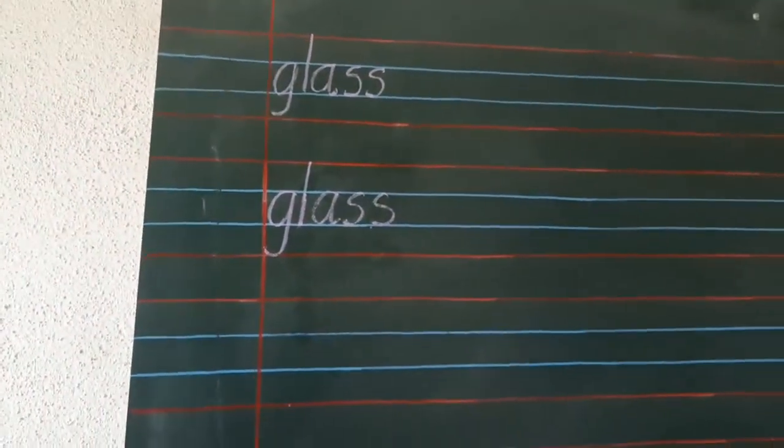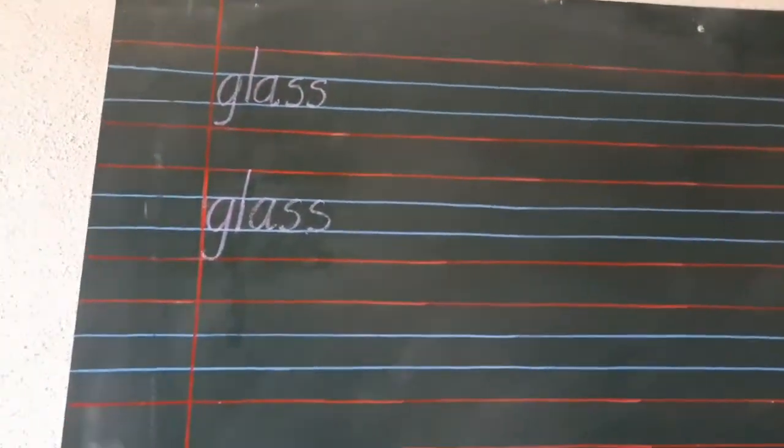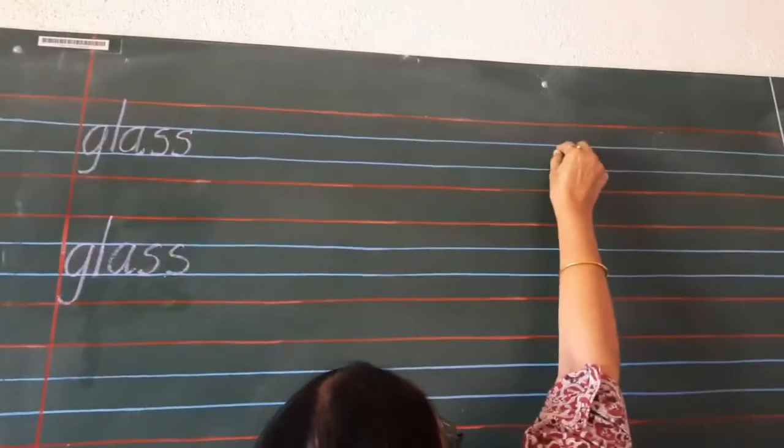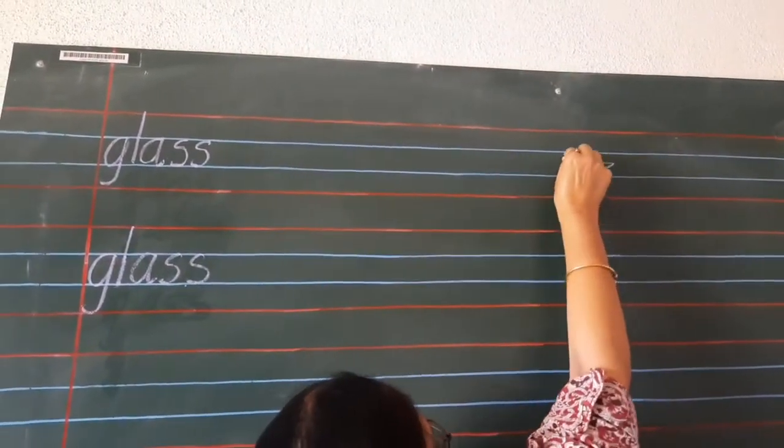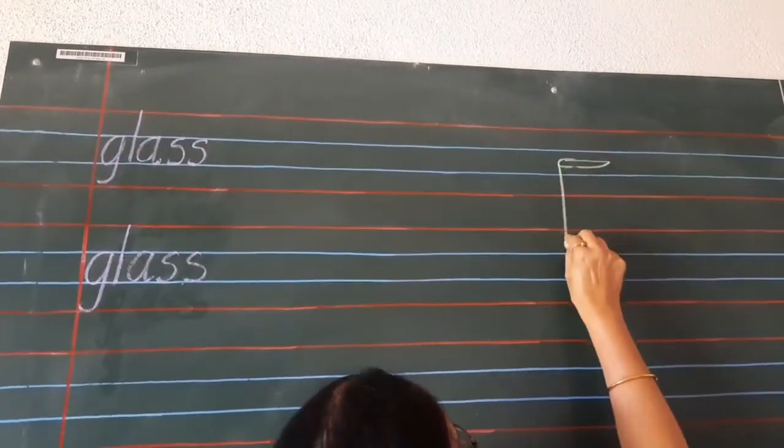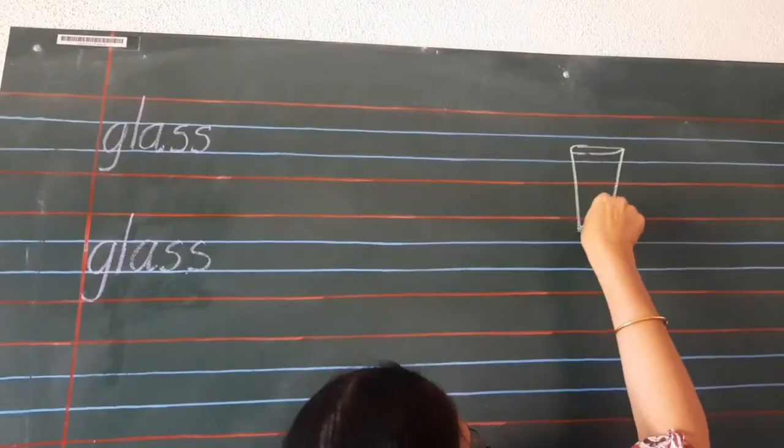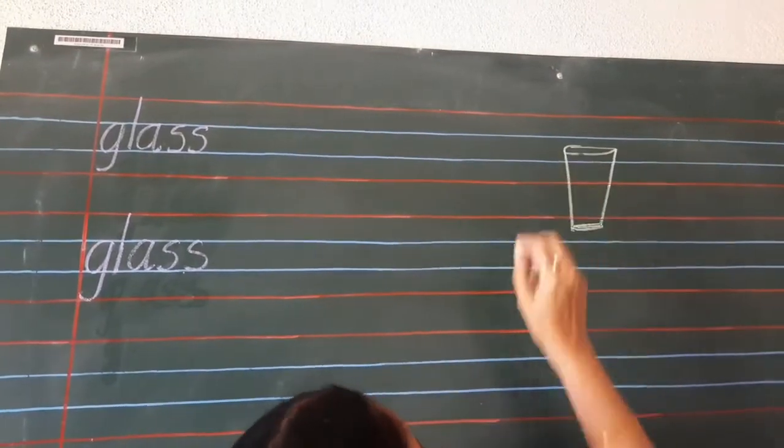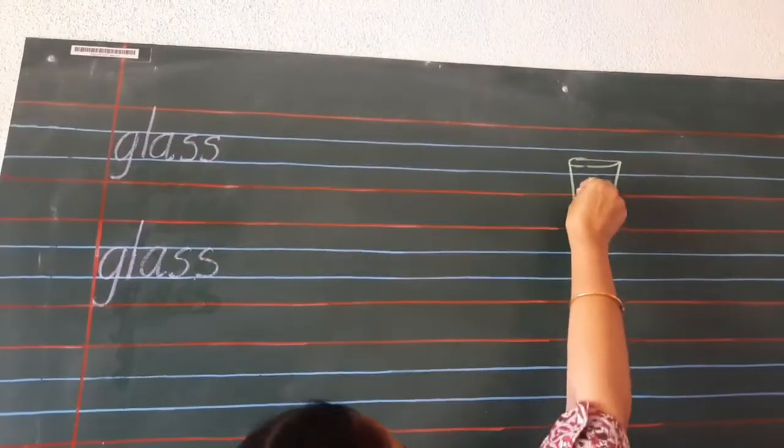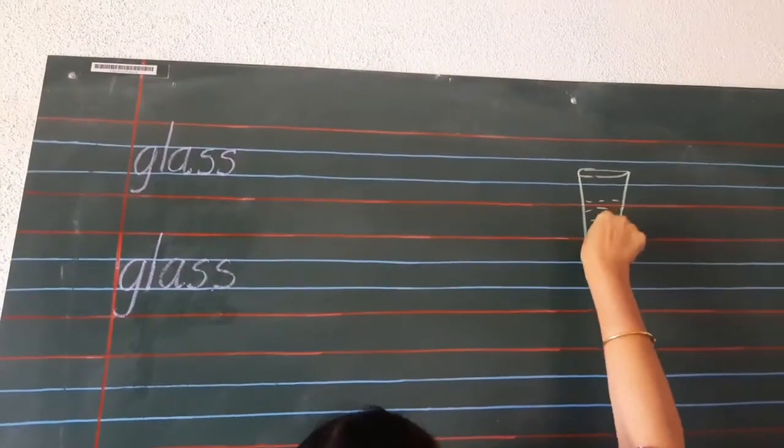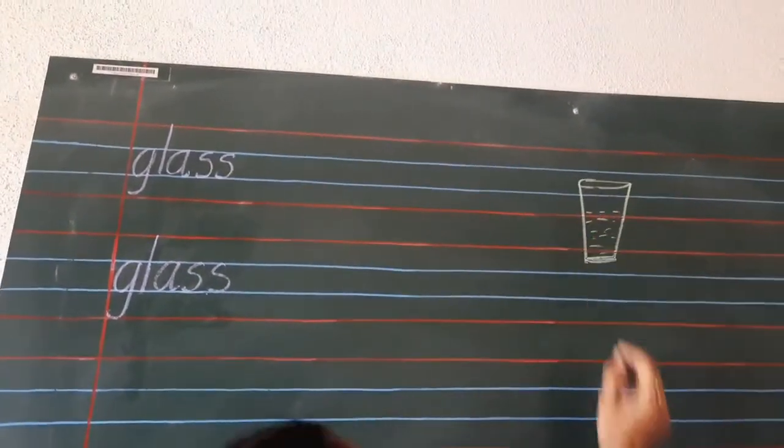Now, let's draw its picture. So first of all, you can draw an oval shape. Below that, two slant lines. And join the slant line with a sleeping line. And then inside, you can draw water. So, this is the picture of a glass.